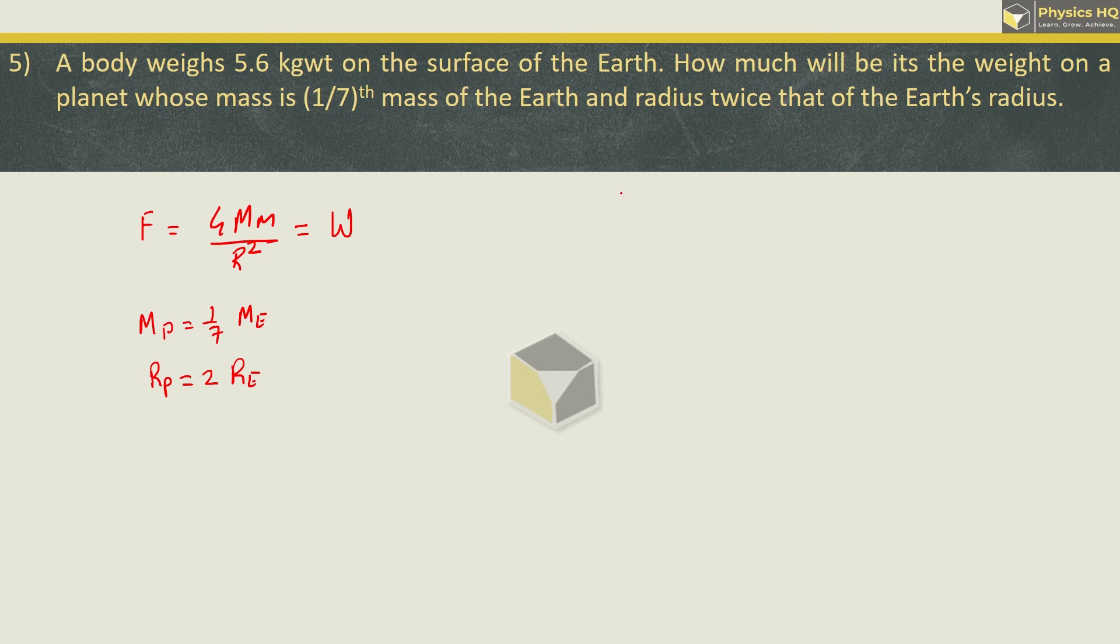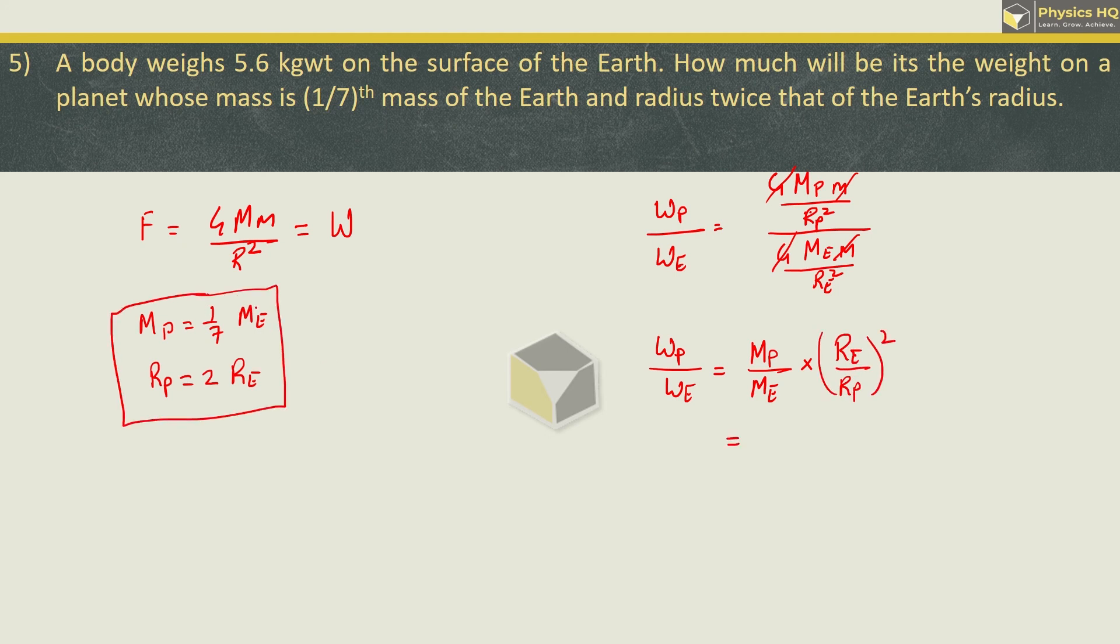Weight equals GMm/r². Now for the new planet, mass of that planet is one-seventh of the mass of the earth, and radius of that planet is twice that of the radius of earth. Let us take the ratio: weight on that planet upon weight on earth. This becomes mass of that planet upon mass of earth times radius of earth upon radius of that planet squared.